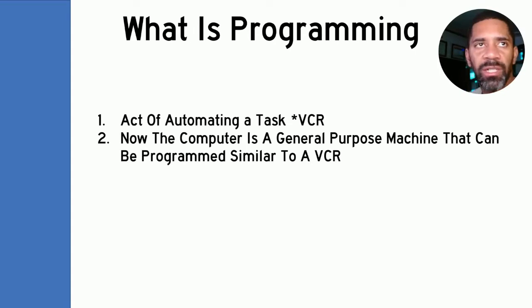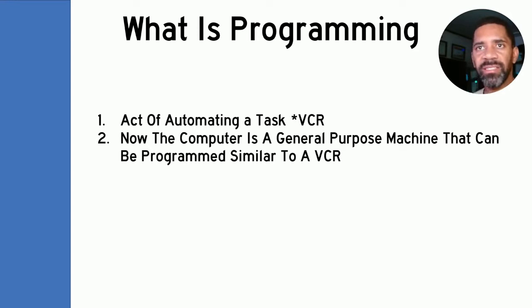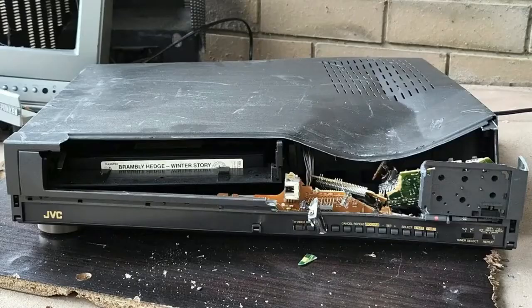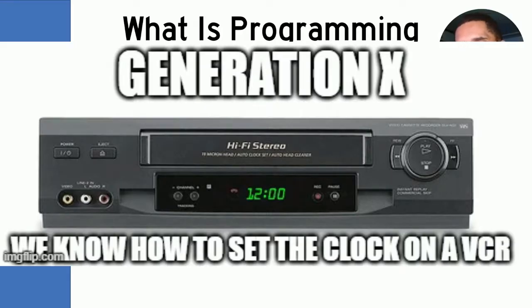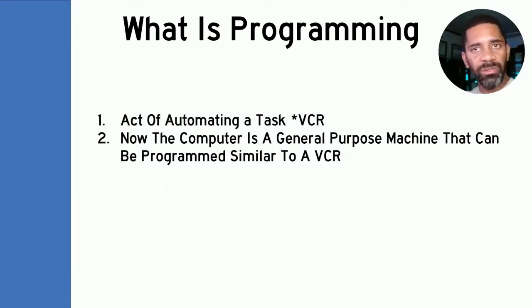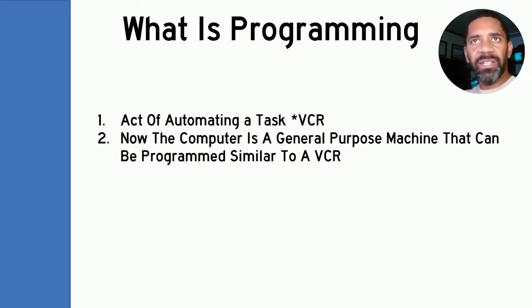Programming is the task of automation. Programming is making a machine do something on its own, triggered by an event or something. The easiest example — my first time programming something was programming a VCR. You'd set the VCR so you don't have to be there for it to record your favorite show. You set the clock so the VCR knows what time to record. It's automation — you automate the task so when you come home, your show is recorded because you were at work when it came on.